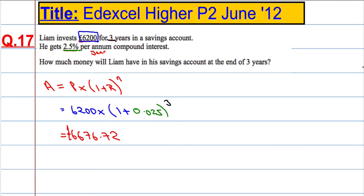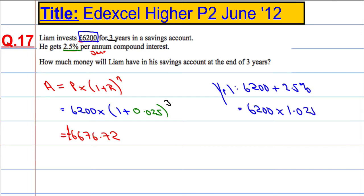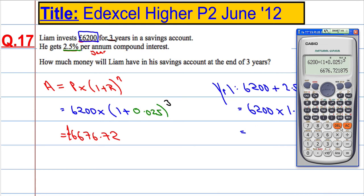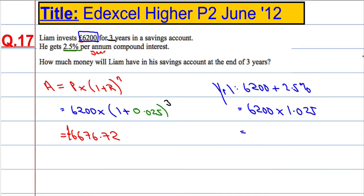Another way we could do it is year by year. At the end of year one, you will have 6,200 plus 2.5%, which is going to equal 6,200 multiplied by 1.025 — that's 102.5%. So 6,200 multiplied by 1.025 gives 6,355. That's what he has at the end of year one.